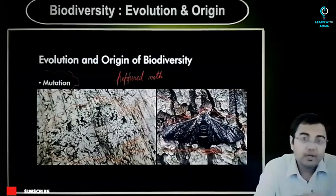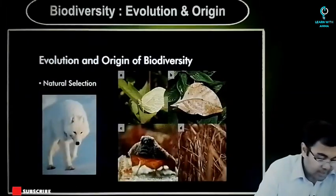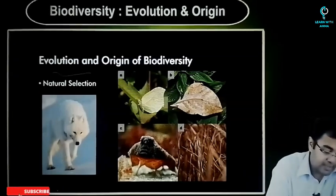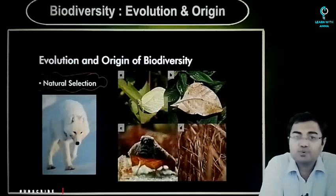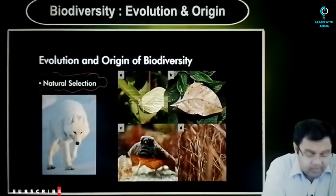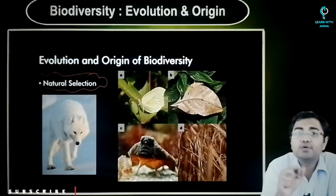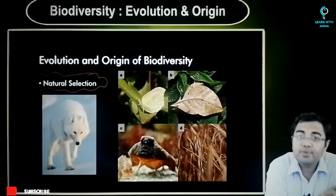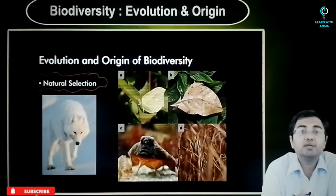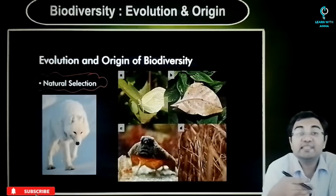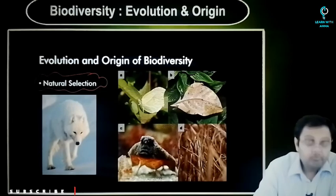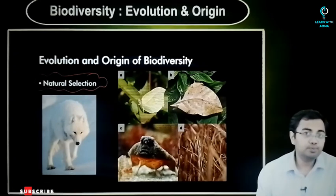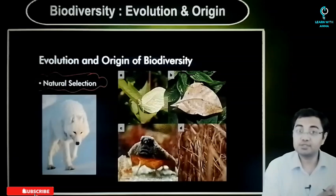The second way in which the evolution of biodiversity happens is natural selection. Natural selection is a term you might have come across. When we talk about natural selection, we are talking about traits that develop in a population of organisms and are carried through successive generations. We have two pictures here to illustrate how natural selection would happen.